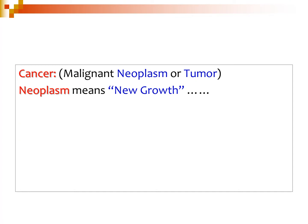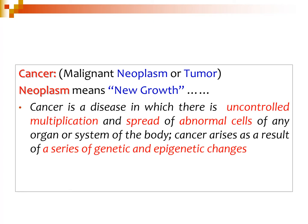What is cancer? Simply, it is a malignant neoplasm or tumour. Neoplasm means new growth. Cancer is a disease in which there is an uncontrolled multiplication of abnormal cells — not of normal cells — and it may affect any organ or system of the body. Usually, cancer results from a series of genetic and epigenetic changes in the cells or tissue.